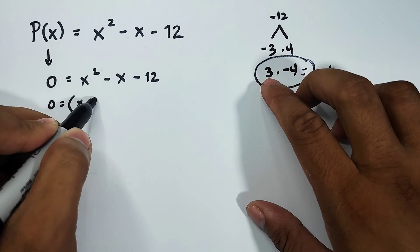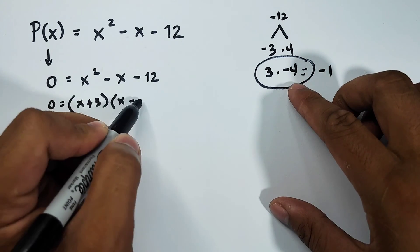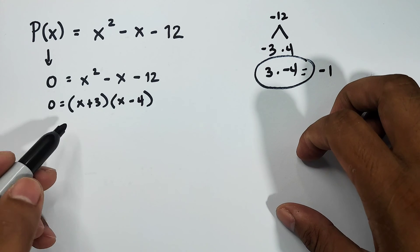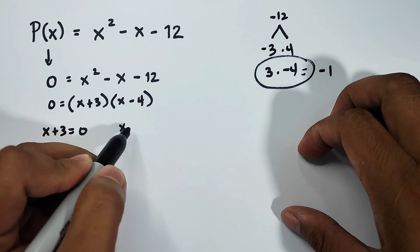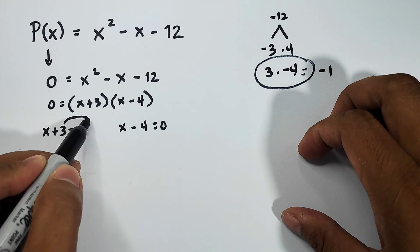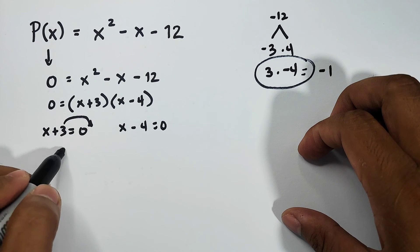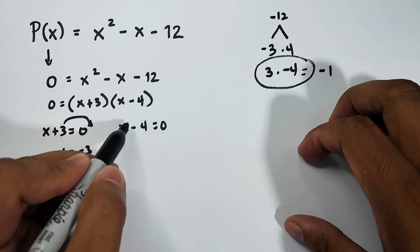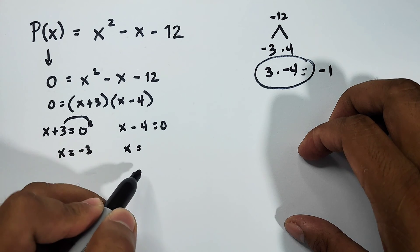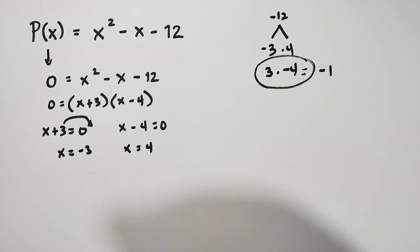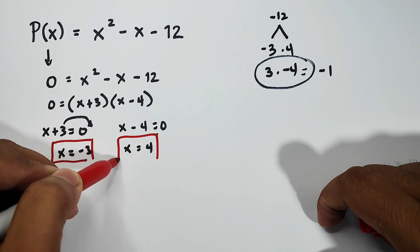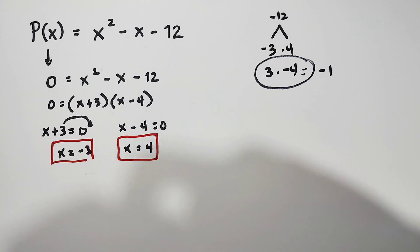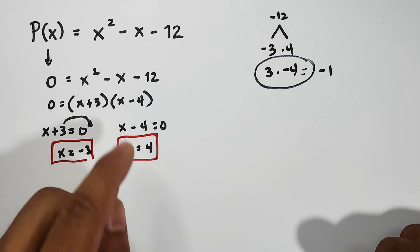And equate each factor by 0: x + 3 = 0 and the other is x - 4 = 0. Transpose this to the other side: x = -3, and transpose this to the other side: x = 4. What is the meaning of this? Since we calculated x = -3 and x = 4, these are the zeros of the given polynomial function. So we have 1, 2 zeros and the degree is 2.